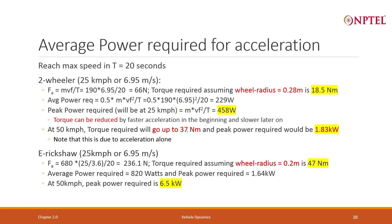Similarly, you compute for E-Rickshaw. For the E-Rickshaw, the force is much more because you have a weight of 680 instead of 190. The force required is 236 N and the torque requirement is 47 N·m. Average power requirement due to this acceleration is 820 W, but the peak power requirement is 1.64 kW.